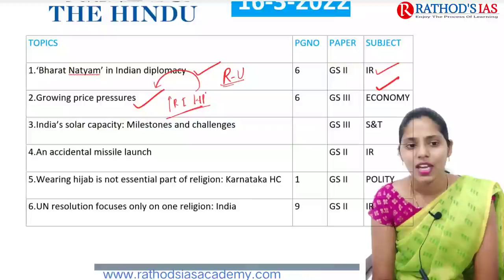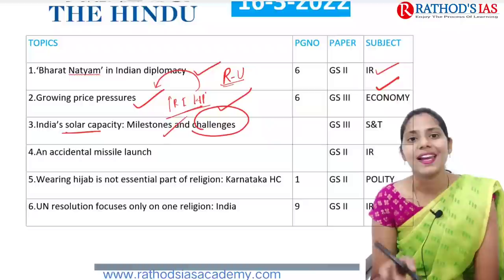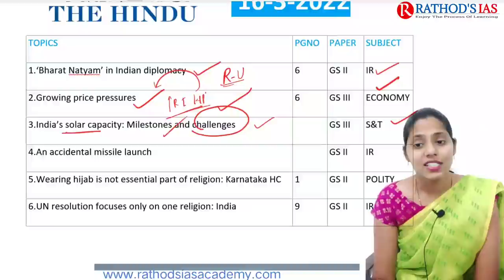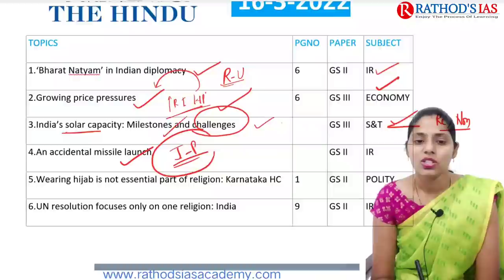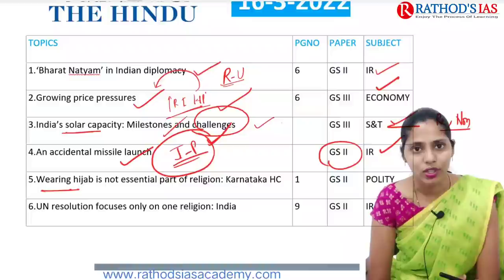Next topic is regarding India's solar capacity — mainly the challenges and milestones we have reached. This topic is taken from Text and Context and is important from Science and Technology, specifically under renewable and non-renewable sources. Next is the accidental missile launch, regarding India and Pakistan — India accidentally launched one missile which landed inside Pakistan's territory. This article is important from International Relations, GS Paper 2.